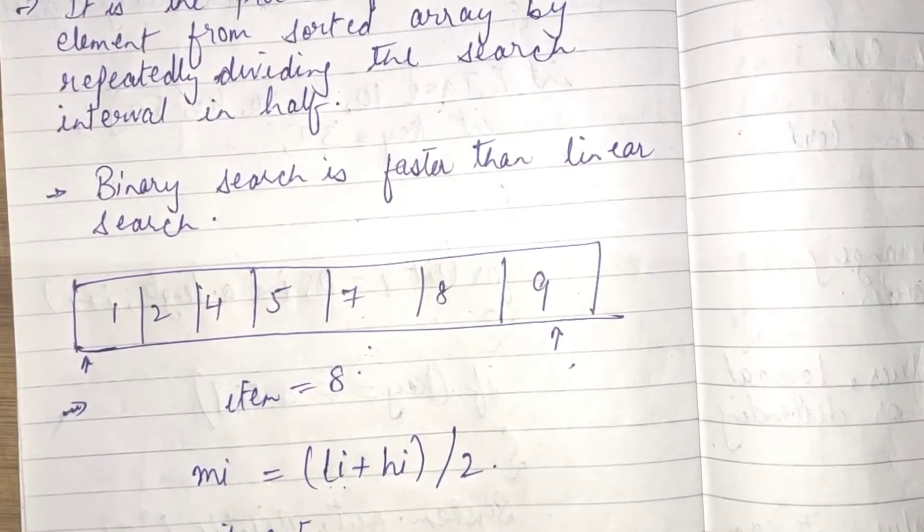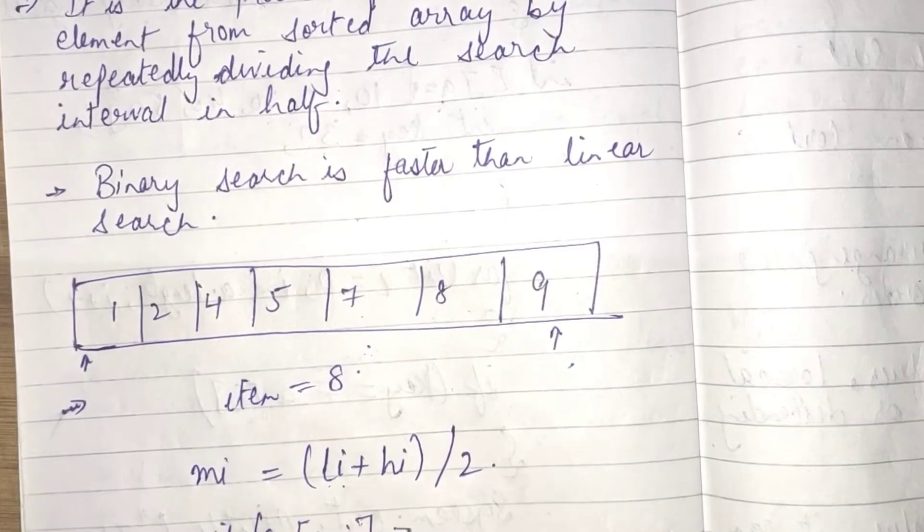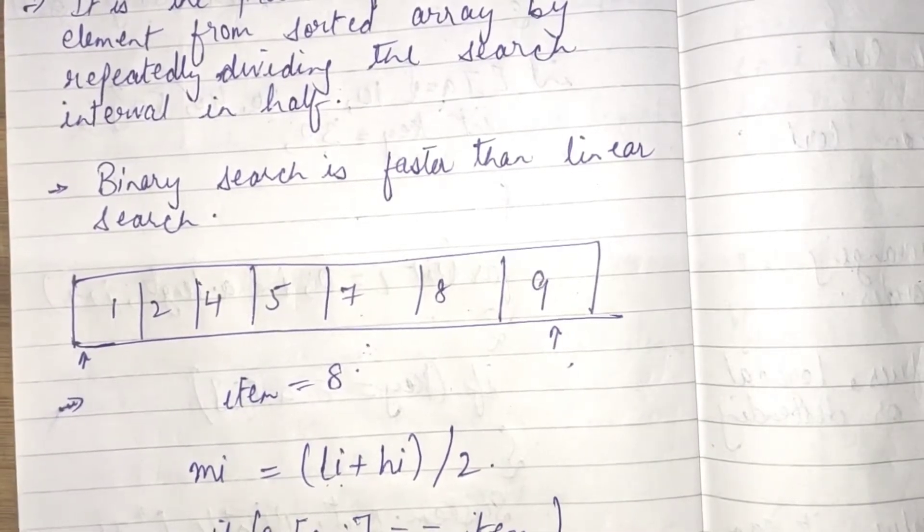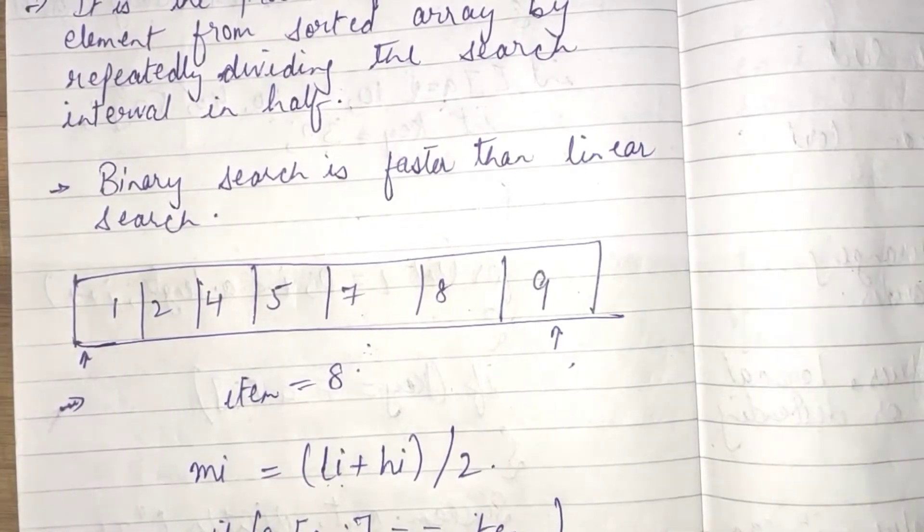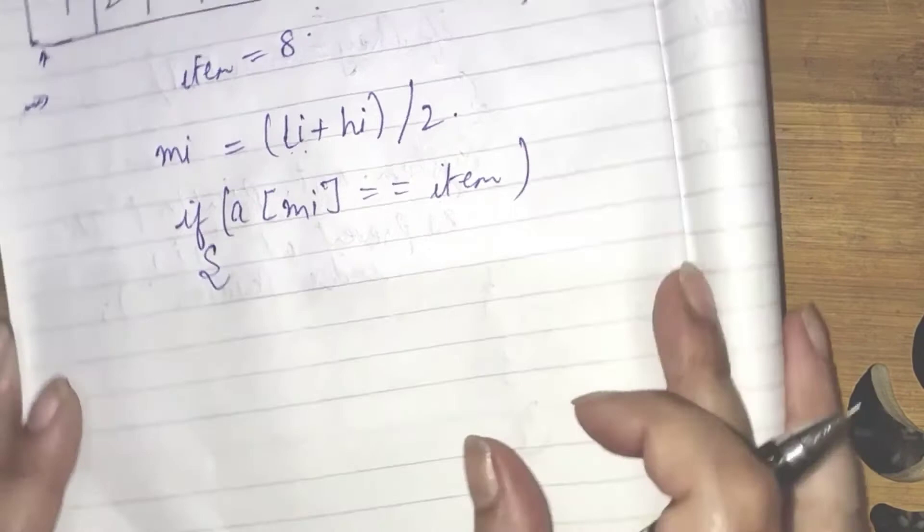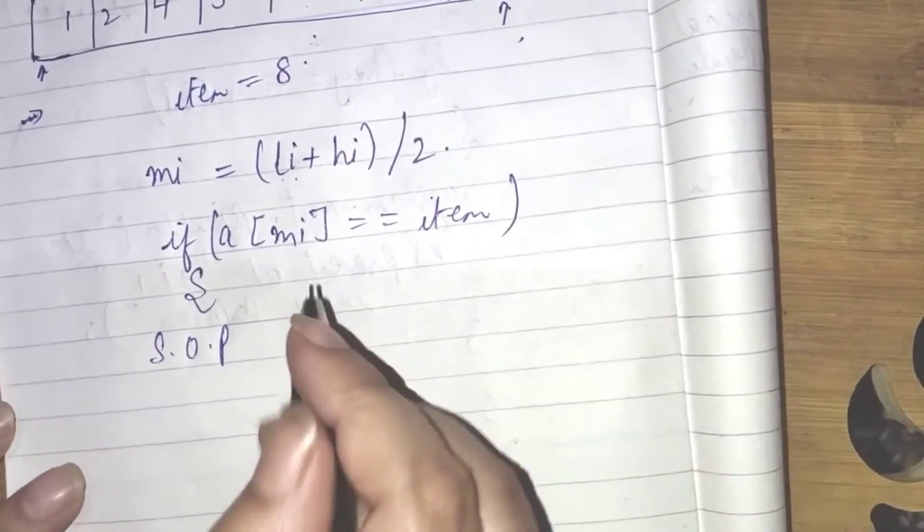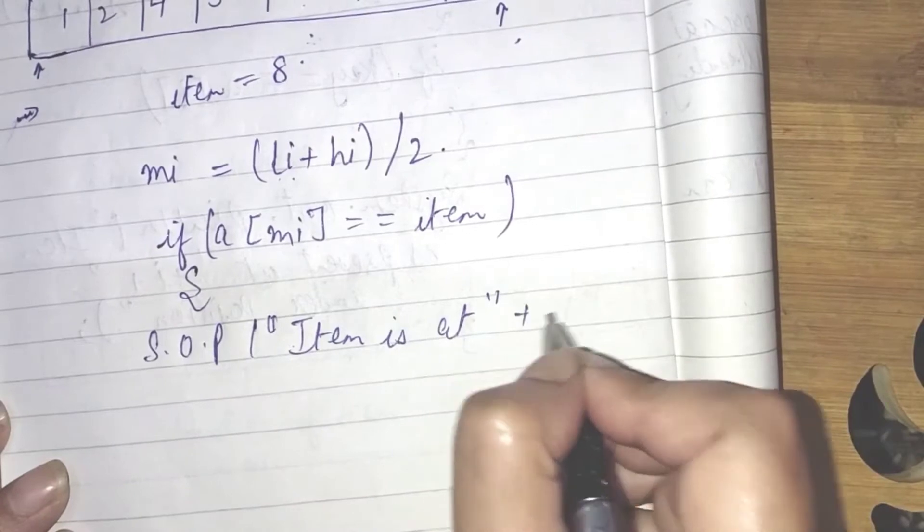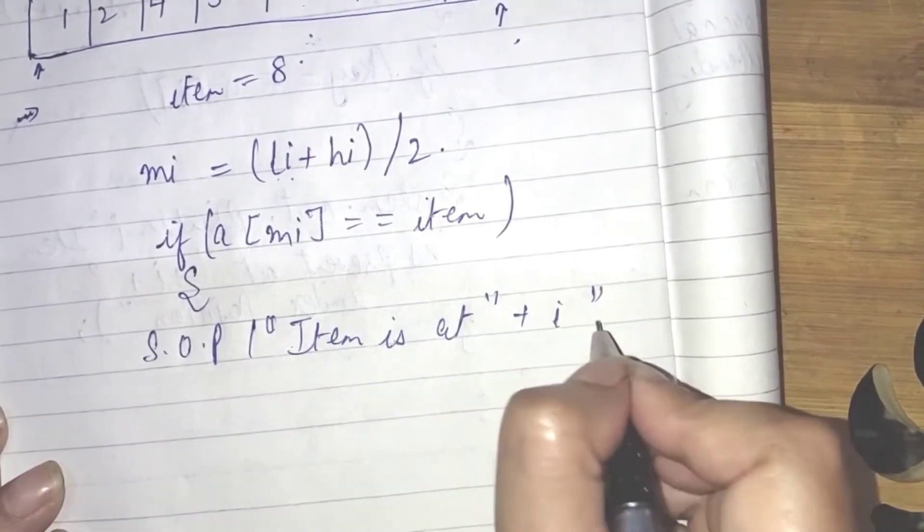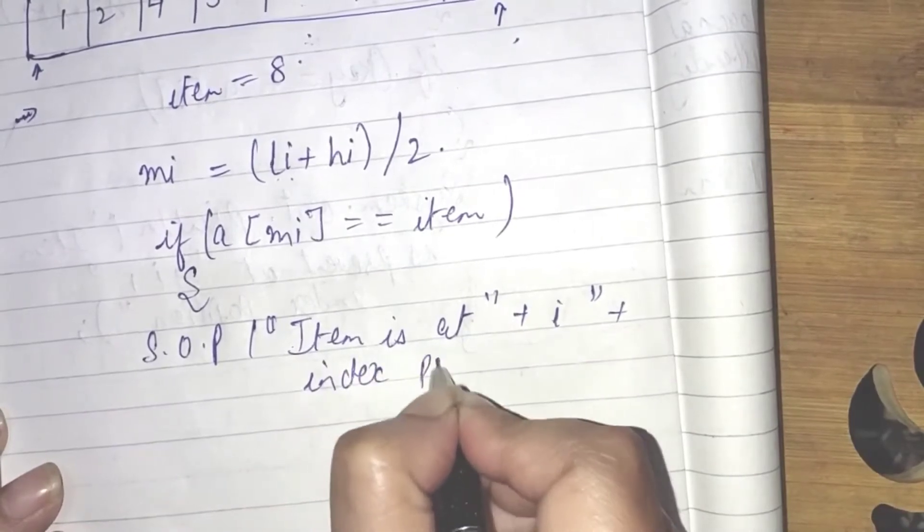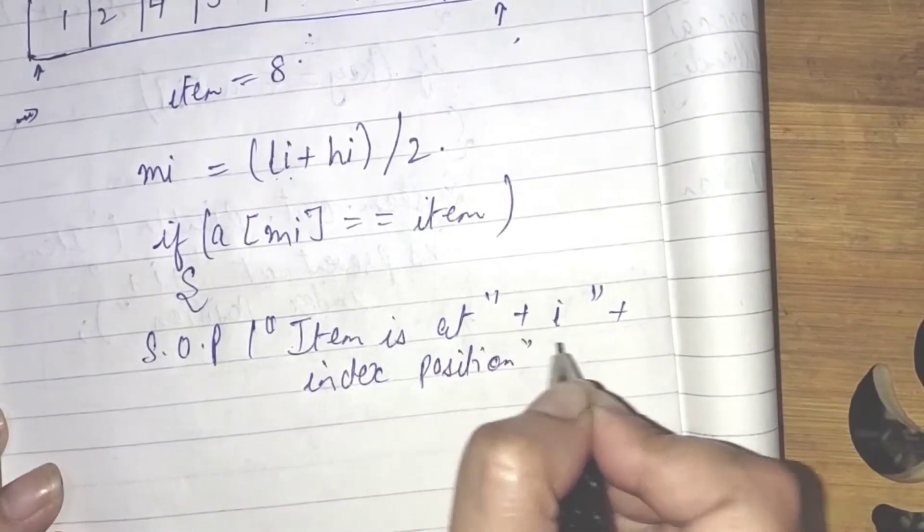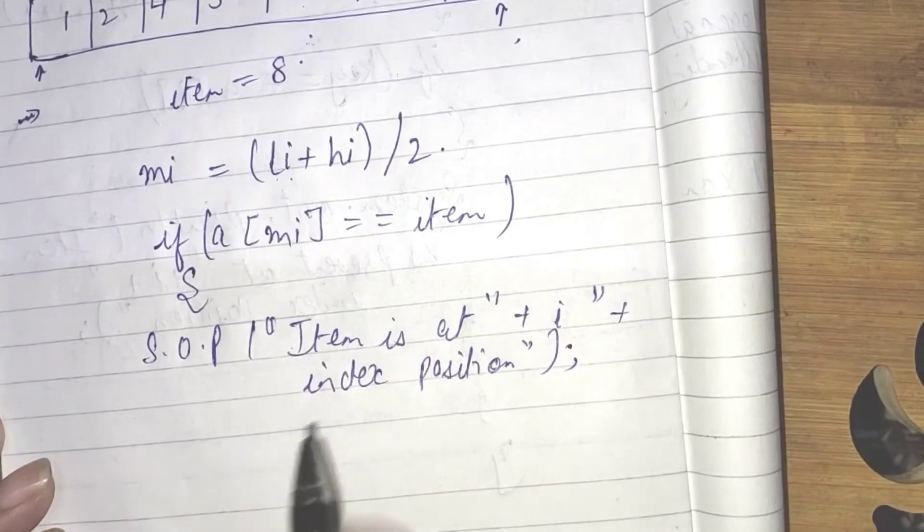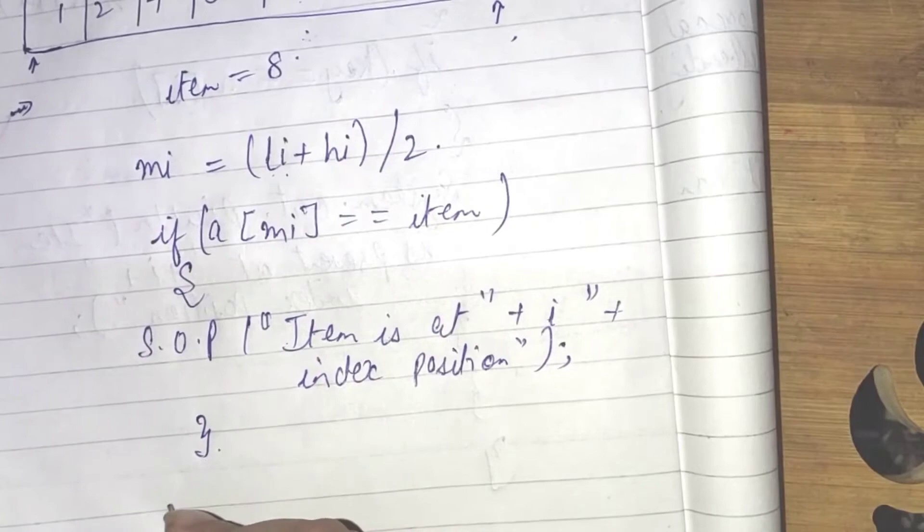So, if ADMI is found, then it's good. It will display the output as system.out.println item is at plus I plus index position. If you found the element or if you found your search element, then the item position is going to be displayed.